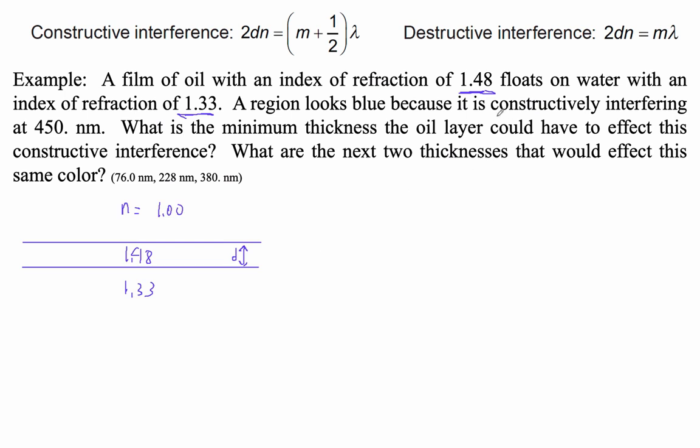It's constructive interference, so I'm going to use the constructive interference formula. 2 times the thickness times the index of refraction equals M plus one-half lambda. That phase shift of one-half is because the first boundary inverts the wave, and so if it has no thickness, it'll actually totally destructively interfere.